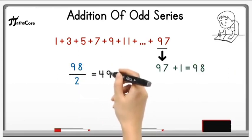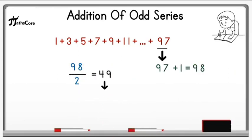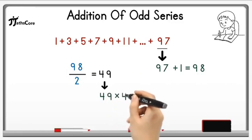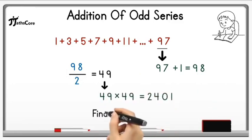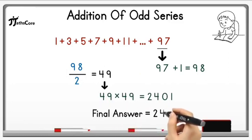Now we have to multiply this 49 with itself. So 49 multiplied by 49 is 49 square and which is equal to 2401. So the final answer is 2401.